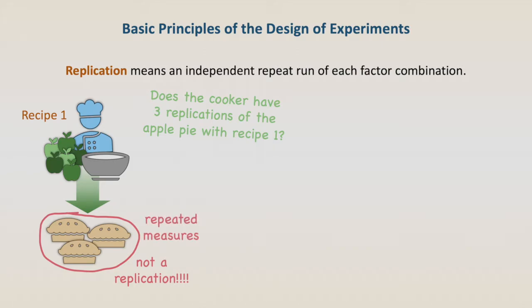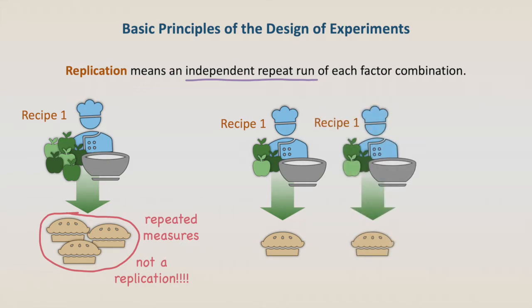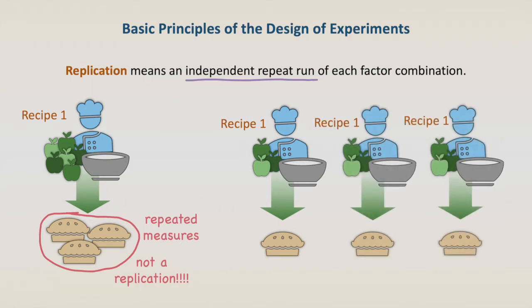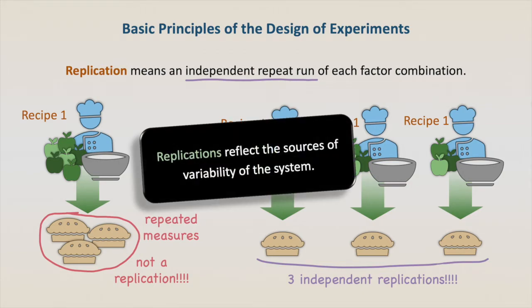Replication means an independent repeat run of each factor combination. To have 3 replications, the cooker has to do 1 pie using recipe 1, then another one from scratch, and then a third one from scratch again. Now the cooker has 3 independent replications. The replications reflect the sources of variability of the system — in this case, how much the pies of the same recipe differ from each other.